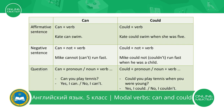Now let's reflect on modal verbs can and could. Look at the table, please. Here you see three types of sentences: affirmative, negative, and question with can and could. First, look at modal verb can. To make an affirmative sentence with can, we should use can and add the verb in the infinitive form. For example, Kate can swim.